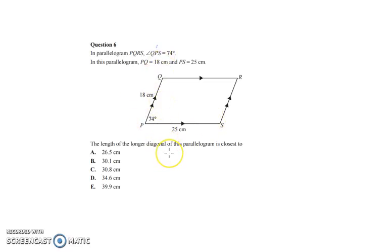The length of the longer diagonal of this parallelogram is closest to. So if those two angles are 74 degrees, they equal 148. So let's put that in there. It's 148, those two angles.